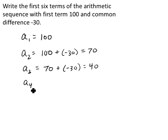So the fourth term, we take the previous term, 40, and add the negative 30. Now that gives us 10.